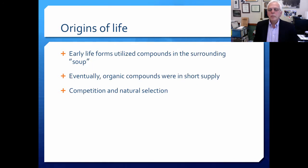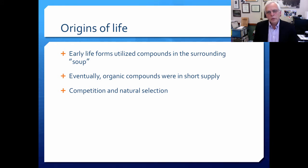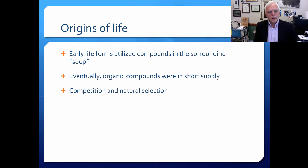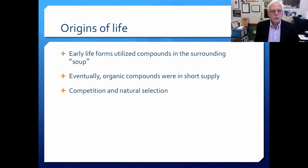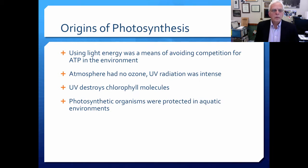Early life forms utilized compounds in the surrounding soup of material, and eventually these organic compounds were in short supply. The reason organic compounds were important was because those bond energies were fairly rich and could be metabolized to remove that bond energy and sustain life. We can expect there was probably some degree of competition and natural selection, so that those that could work the best could survive and reproduce better. Using light energy was really a means of avoiding competition for ATP and other things in the environment.